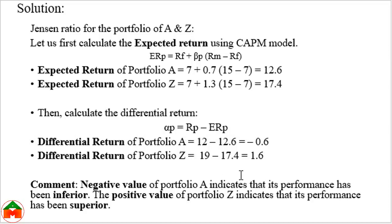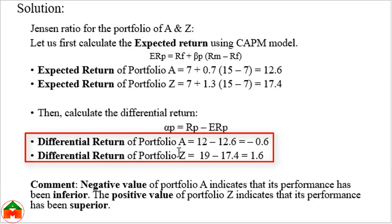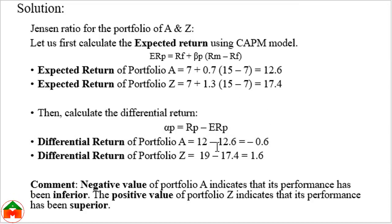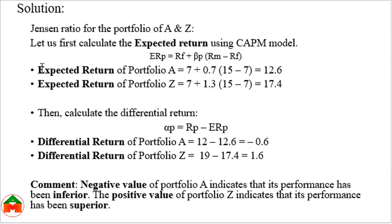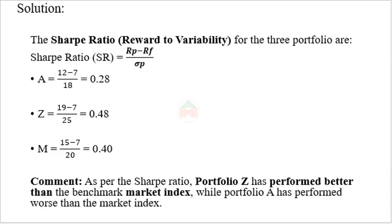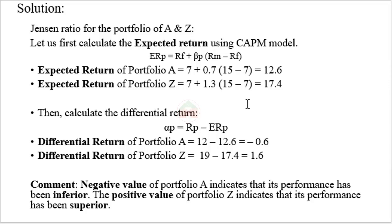The decision rule for the Jensen ratio: if the differential return is negative, the performance is poor; if positive, the performance is good. Portfolio A has a differential return of −0.6, so it is performing poorly. Portfolio Z has a differential return of +1.6, so it is performing well. In all three measures — Sharpe ratio, Treynor ratio, and Jensen ratio — Portfolio Z is performing in a superior position. These are the three ratios used to measure portfolio performance.